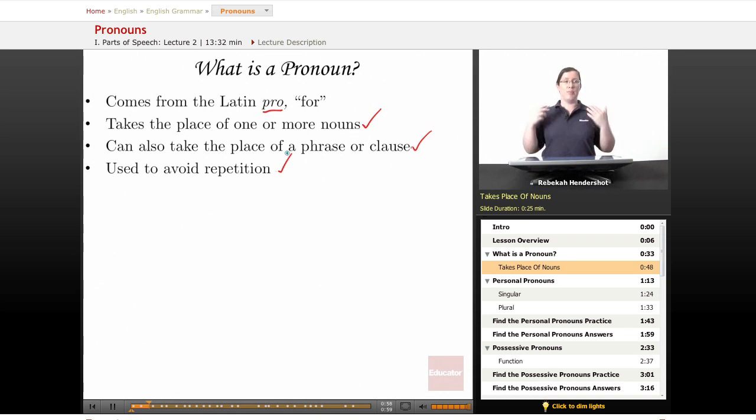You wouldn't say, Bob went to the store, Bob bought milk, Bob went back to Bob's house in Bob's car. You get really repetitive with the Bob. So you use pronouns: Bob went to the store, he bought milk, he went to his house in his car, and so on.